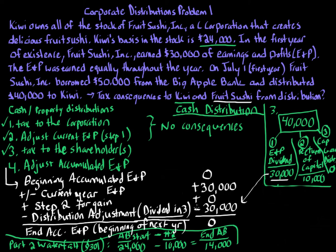So next year, at the beginning of the year, the accumulated E&P will be zero. That's very important. If I gave you facts for year two with a $10,000 distribution and $5,000 of E&P, when you reach step three and calculate total E&P, accumulated E&P would be zero and current year E&P would be $5,000. That's why the step four calculation matters — it feeds into the following year's analysis.